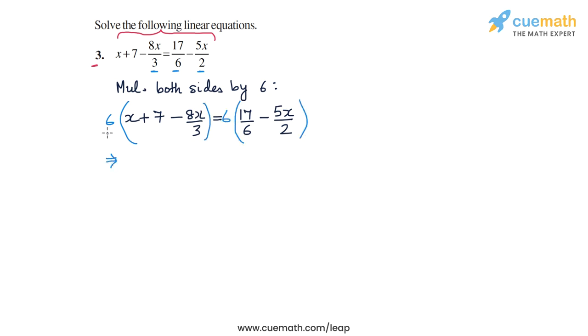Now let's carry out the multiplication. We have 6 into x that's 6x, then 6 into 7 that's 42, and then 6 into minus 8x by 3 this will be minus 16x on the left hand side. On the right hand side we have 6 into 17 by 6 that's 17, and then 6 into minus 5x by 2 and that will be minus 15x.